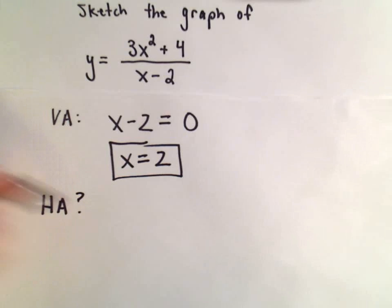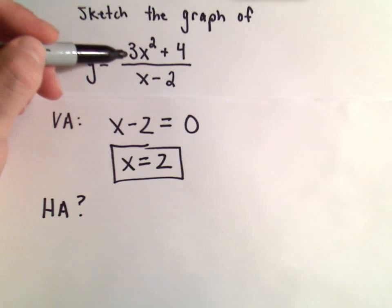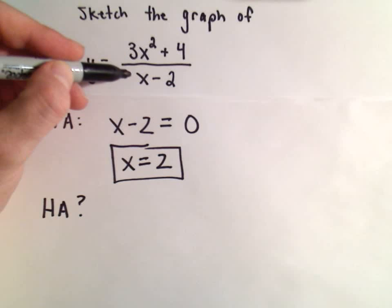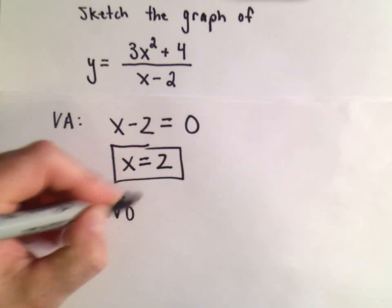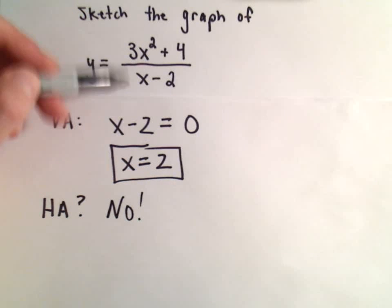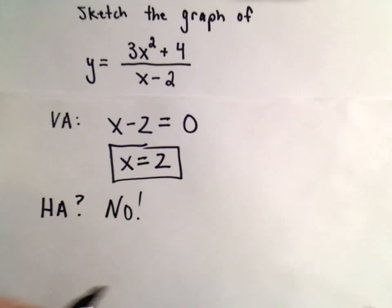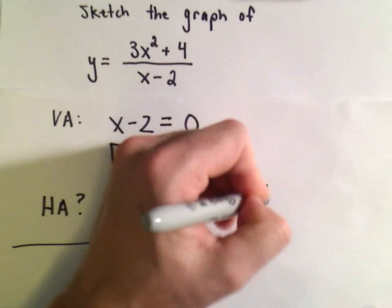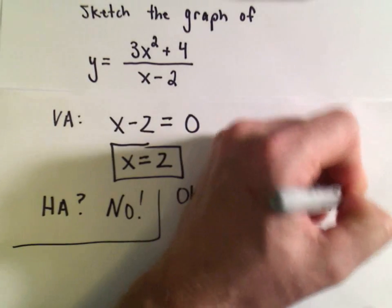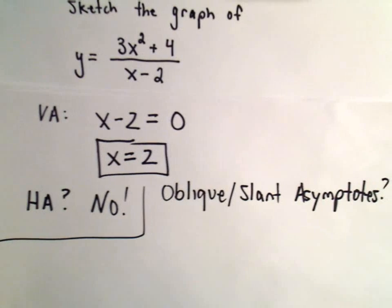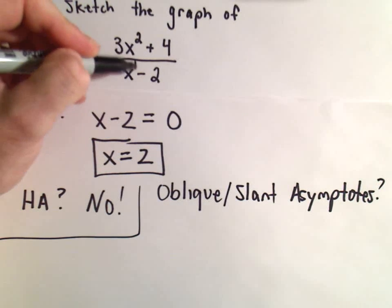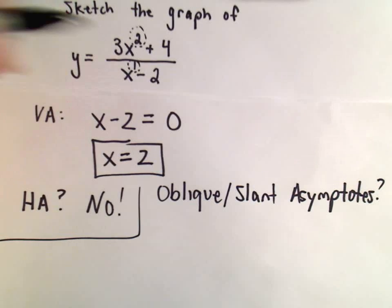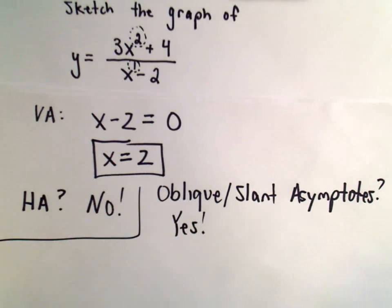Horizontal asymptotes only occur when the degree of the numerator equals or is less than the degree of the denominator. Here the numerator has degree 2 and the denominator has degree 1, so neither condition is met — there are no horizontal asymptotes. However, slant asymptotes occur when the degree of the numerator is exactly one larger than the denominator's degree, which is exactly our case, so there will be a slant asymptote.